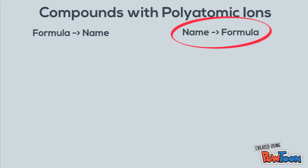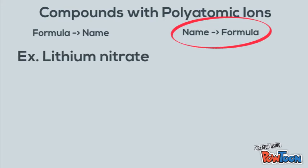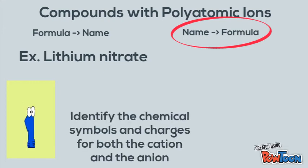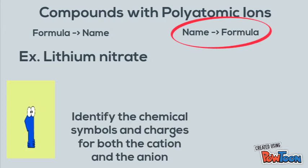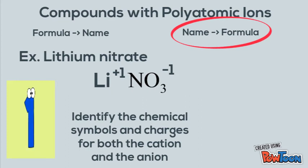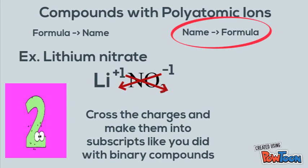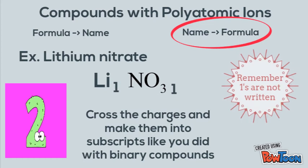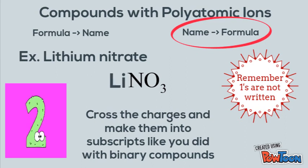Let's move on to giving you the name and asking you for the formula. Our example here is lithium nitrate. Step number one is to identify the chemical symbols and charges for both the anion and the cation. Li is a +1, and look at your list — nitrate is NO₃ with a −1 charge. Step number two is to cross the charges and make them into subscripts like you did with binary compounds. You cross those two ones, and since ones are not written, you take those out. Your answer for lithium nitrate is LiNO₃.